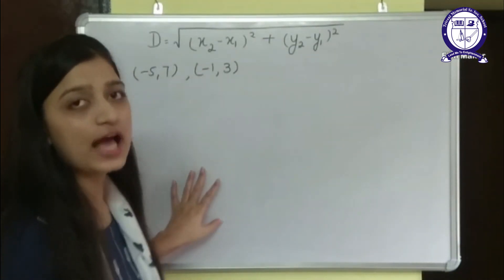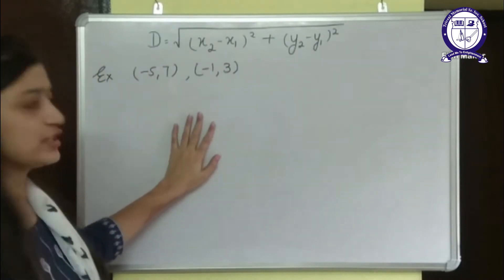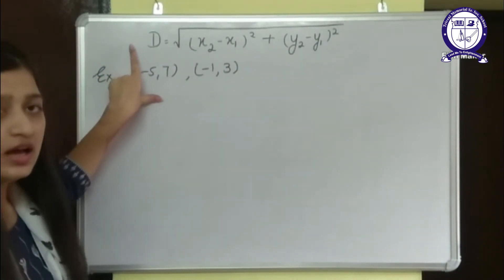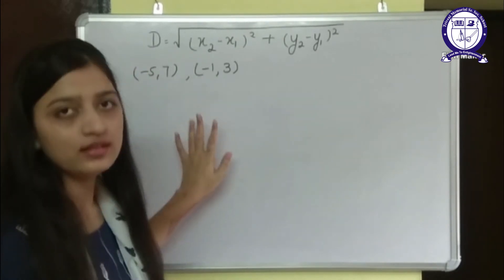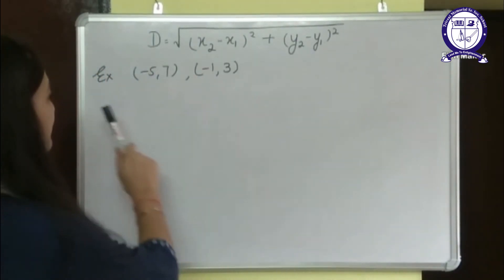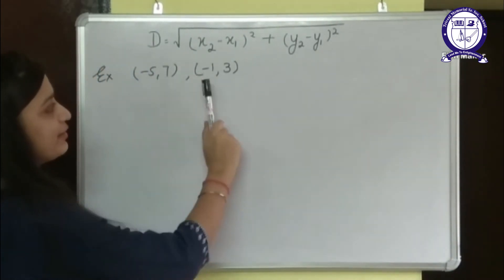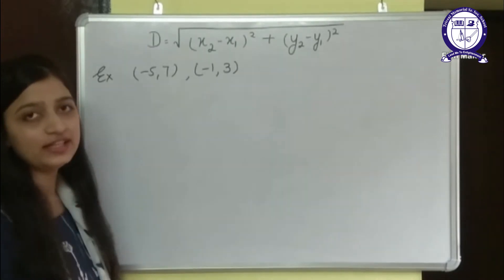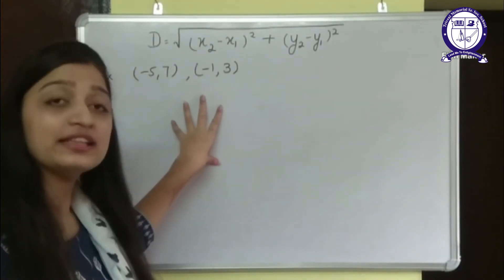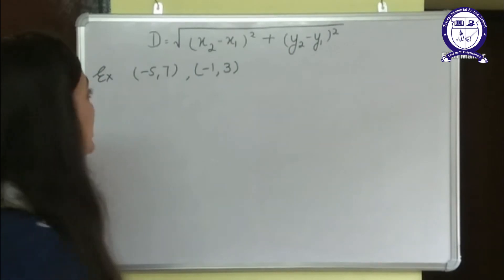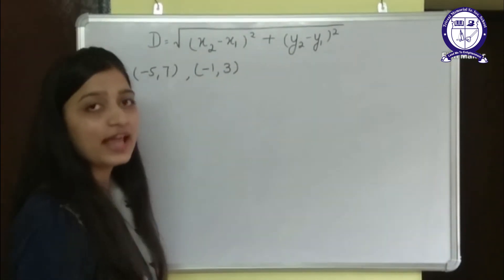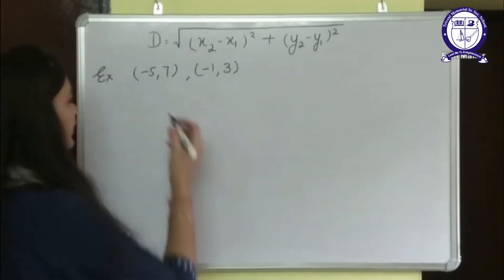Now looking at an example of the distance formula. We are going to apply the formula to these two points: (-5, 7) and (-1, 3). These are two coordinates given to us and we need to find the distance between them. First we write the values: x1 equals minus 5, y1 equals 7, x2 equals minus 1, and y2 equals 3.